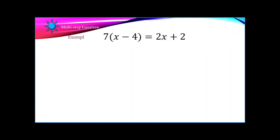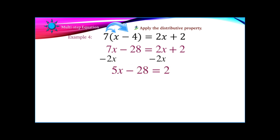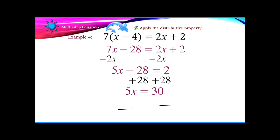Here we have our distribution on the left side of the equation, so we'll do 7 times the quantity x minus 4, and we'll get 7x minus 28. Now it's time to decide which x term to get rid of — the 7x or the 2x. I like to get rid of the smaller one, so we'll subtract 2x from both sides, ending up with 5x minus 28 equals 2. Then we add 28 to both sides to get 5x equals 30, and divide both sides by 5 to get x equals 6.